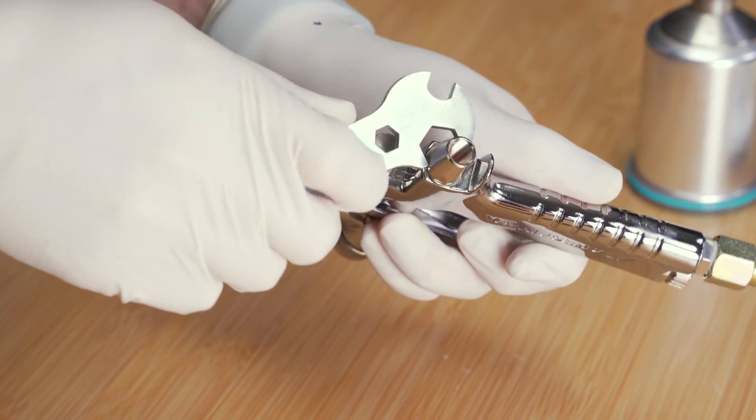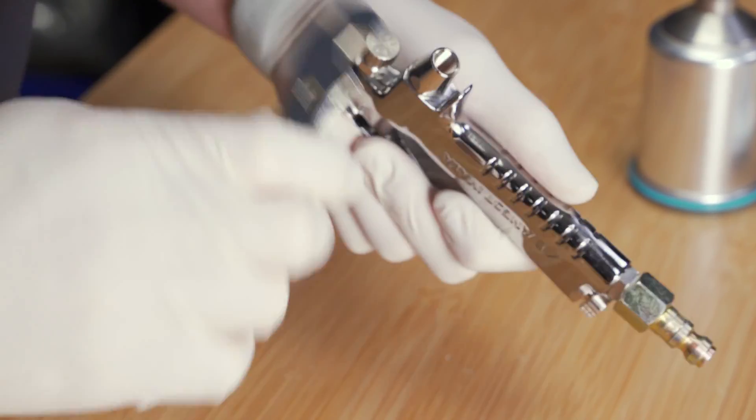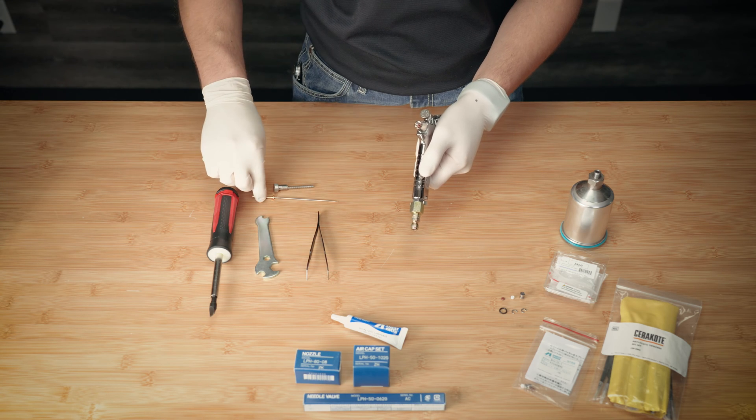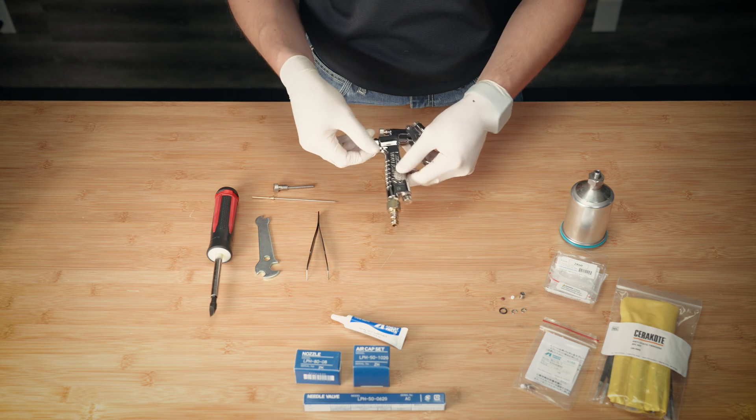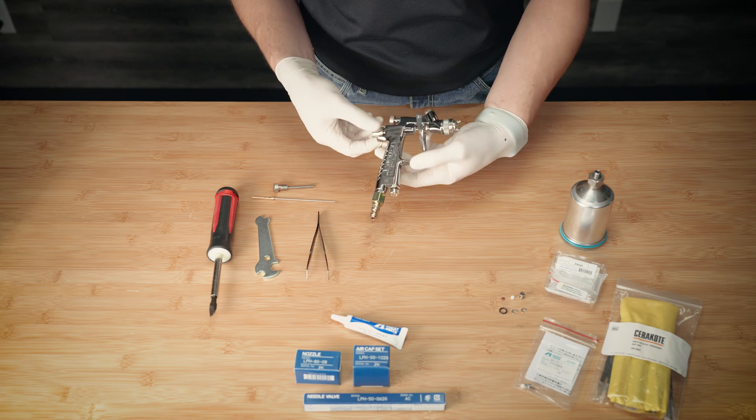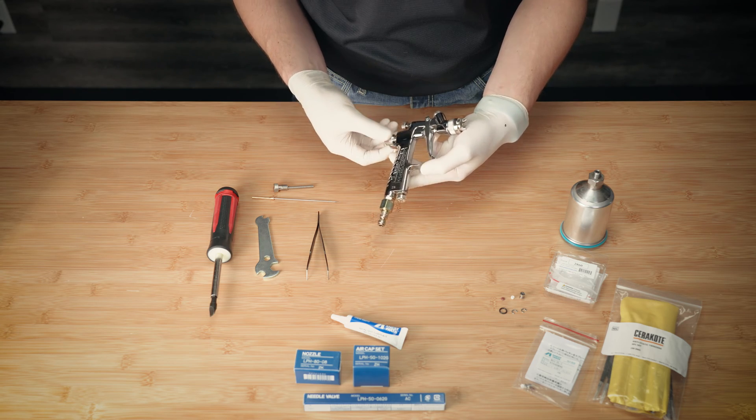Using the supplied wrench, remove the fluid adjustment guide. Be careful not to lose any components as it comes out of the backside of the gun.